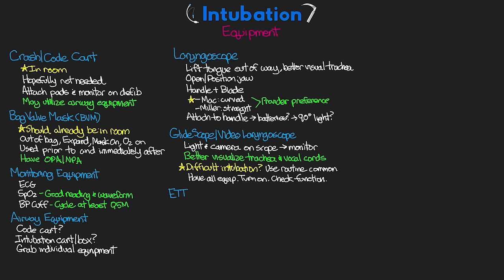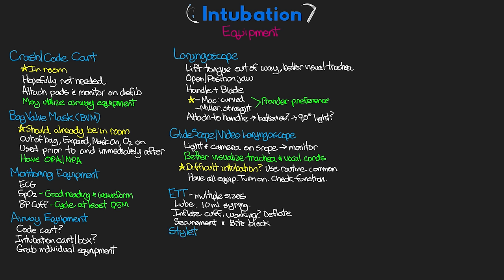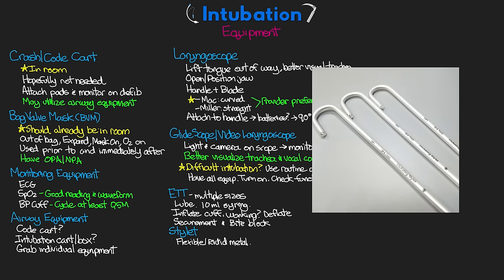Next is obviously our endotracheal tube, often prepared by respiratory therapy, but make sure you have a couple of sizes readily available. You'll need some lube for insertion, a 10 mL syringe to inflate the balloon on the end — ensure that balloon inflates and holds air, then fully deflate it prior to insertion. Also have whatever you'll use to secure the ET tube as well as a bite block. The stylet is a flexible but rigid piece of metal used to stiffen the ET tube during intubation; insert it into the tube prior to intubation and pull it out once the tube is in place.